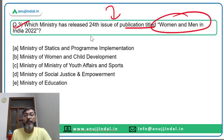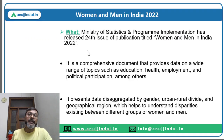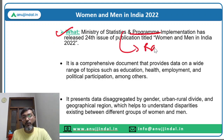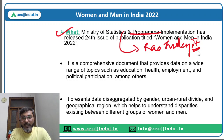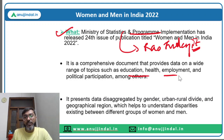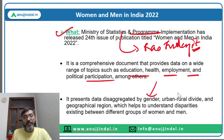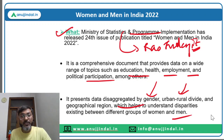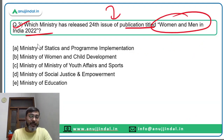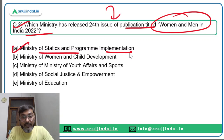Question three: which ministry released the 24th issue of 'Women and Men in India 2020-22'? It was released by the Ministry of Statistics and Programme Implementation, headed by Rao Inderjeet Singh. This publication provides data on a wide range of topics like education, health, employment and political participation concerning women and men. It presents data disaggregated by gender, urban-rural divide and geographical region, helping to understand disparities between different groups. The correct answer is option A — Ministry of Statistics and Programme Implementation.